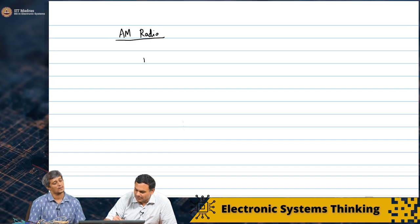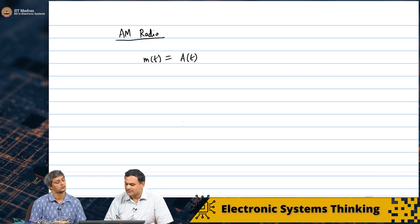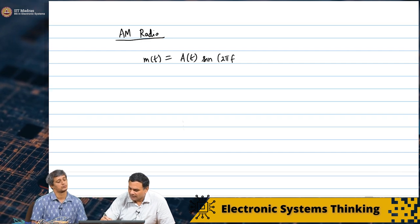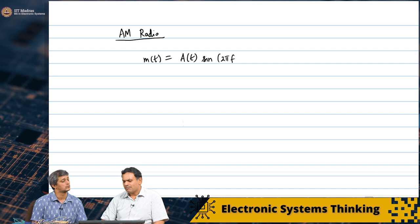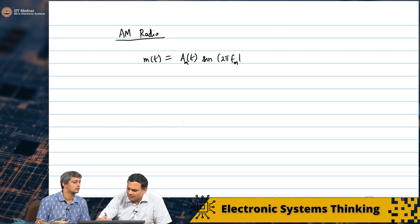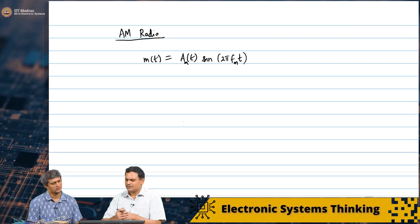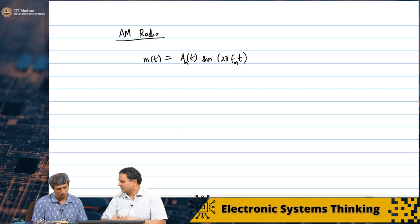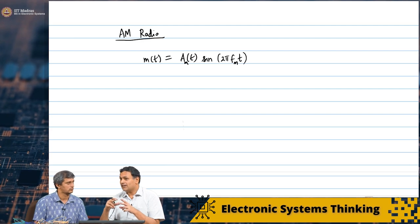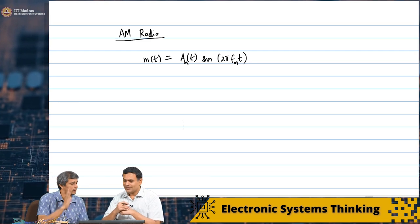We are going to take a message signal M of t, and we said the information is of this sort: A of t times sine 2 pi. Since we are saying M of t, maybe I will call this AM of t, and I will call this 2 pi FM t. The phase can be 0, so we will just assume that it is 0. I want to send this information. The real problem is we already know that we cannot send it out wirelessly because it might interfere with somebody else. You cannot send AM of t directly.